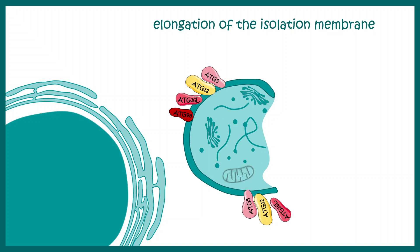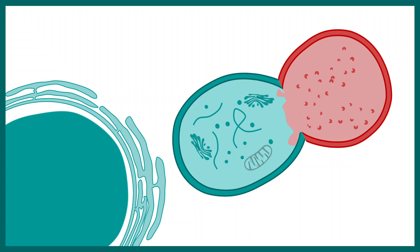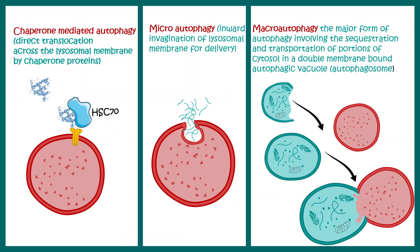The next step of autophagy is elongation of the isolation membrane, which involves several ATG genes including ATG12, ATG5, and many more. Particularly significant here is LC3 — an important regulator and marker of autophagy used to identify cells undergoing autophagy. LC3 gets converted to LC3-II, the autophagy vesicle forms, and the autophagosome is ready to fuse with the lysosome. Once fusion occurs, nutrient recycling takes place.